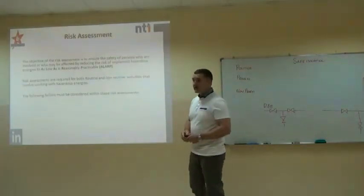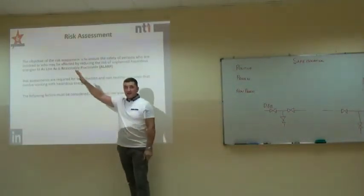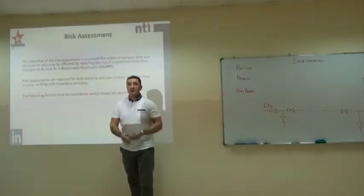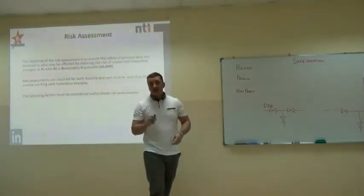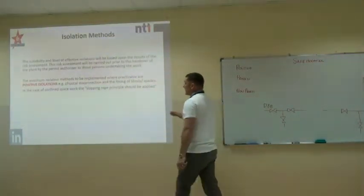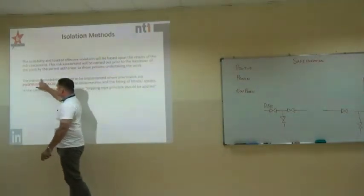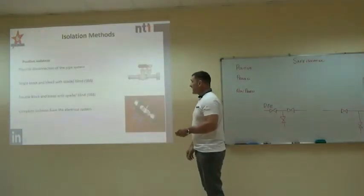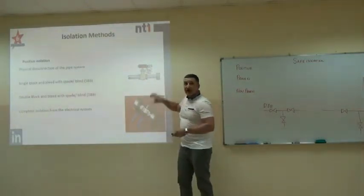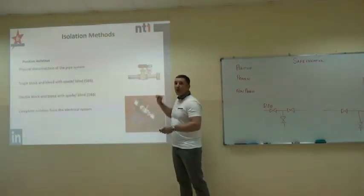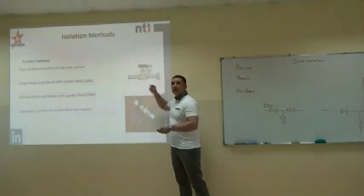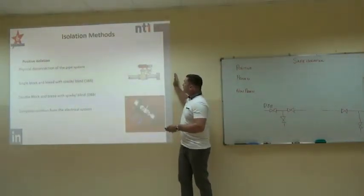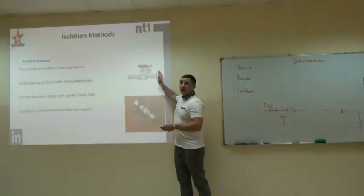We identify the hazardous energies, then we write the risk assessment and reduce the risk to as low as reasonably practicable, and we do that with isolations. There are three types of isolation methodology. The highest is positive isolation — this is a separation of the line and fitting a flange, or we fit a blind or a spade. Blind and spade are the same thing. We never leave any line open in process — we always fit the appropriate anti-flange to that pipe.